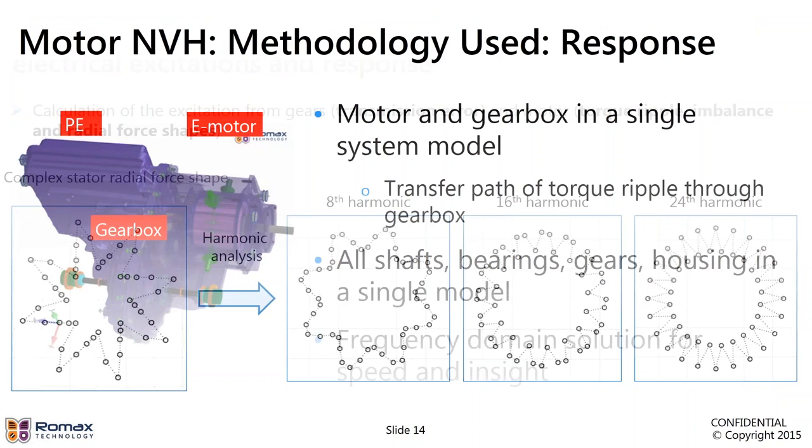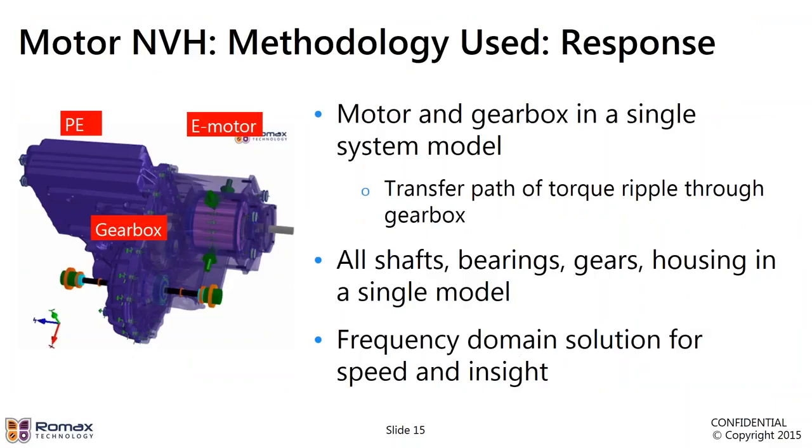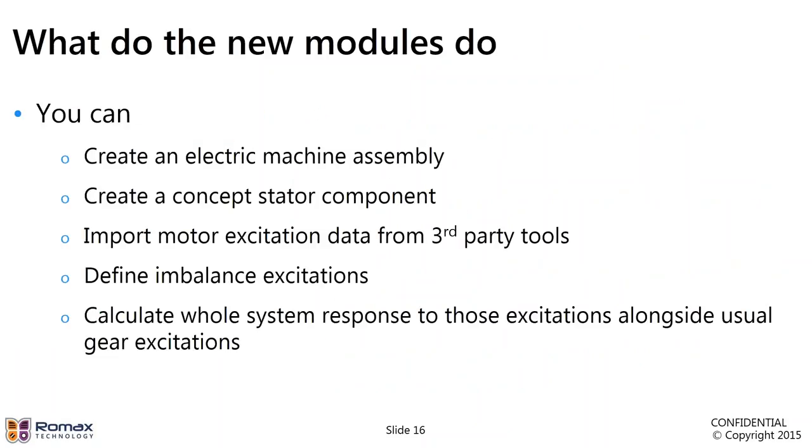So to sum up the solution for the NVH analysis, we are looking at the motor and the gearbox in a single system model. We have all shafts, bearings, gears, the housing, all in a single model. And we're looking at a frequency domain solution, which gives us quick answers and insight. A bit more detail about what the new capability does. It allows us to create an electric machine assembly inside the ROMAX model. We can then create a concepts data component, which is an FE component. We can connect that to the housing through a conformal mesh. We can import electric machine excitation data from third-party tools through a preprocessor. We can define imbalance excitations. And once we have all of these into our model, we can calculate the whole system response to those excitations.